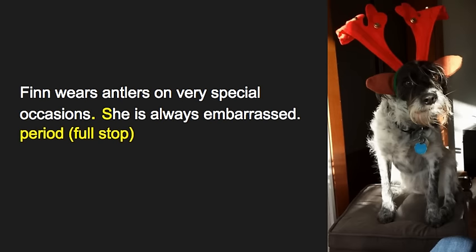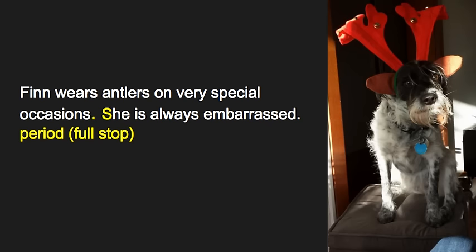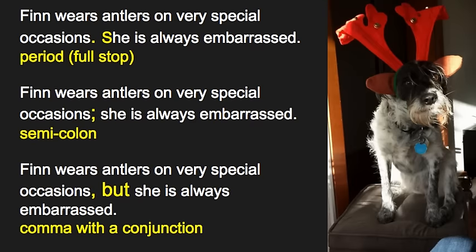How can we fix these? The first way is to make two separate sentences: 'Finn wears antlers on very special occasions.' Period, or full stop, then capitalize the next sentence: 'She is always embarrassed.' You can also use a semicolon when the two sentences are very closely related — maybe one or two semicolons per page. It's a great way to add variety, but if you overuse it, it becomes distracting. The third way is to use a conjunction with a comma: 'Finn wears antlers on very special occasions, but she is always embarrassed.' That's a perfect way of joining two independent clauses.